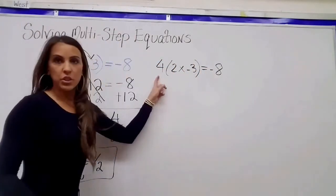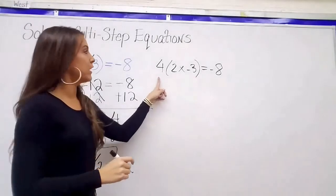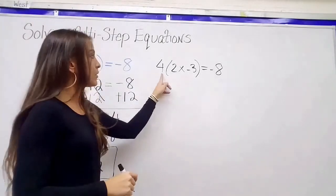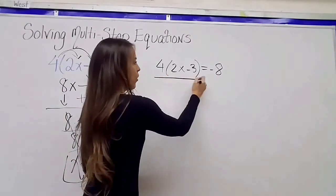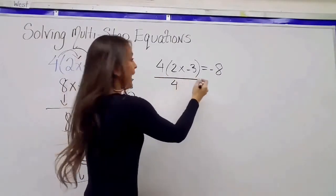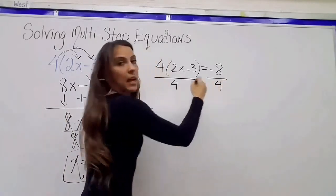So instead of distributing the 4, I could have started by doing the inverse of this multiplication by 4, which would be division of 4. So I can divide the whole left side by 4, and divide, of course, the whole right side by 4.